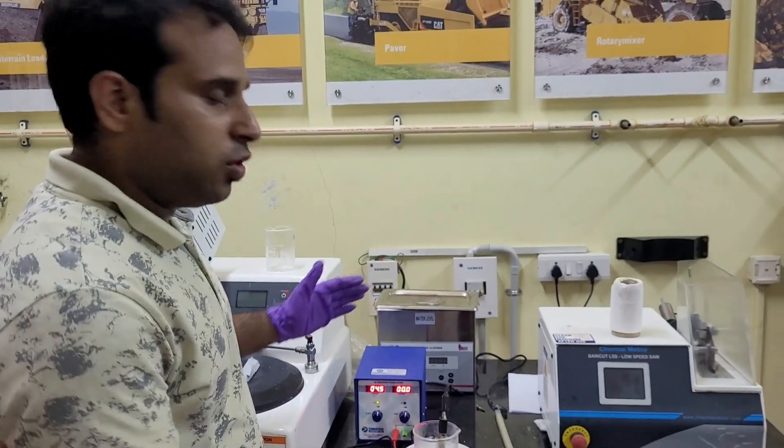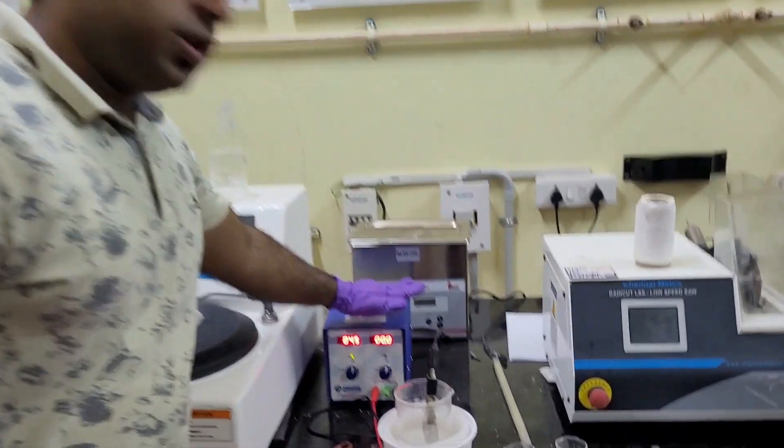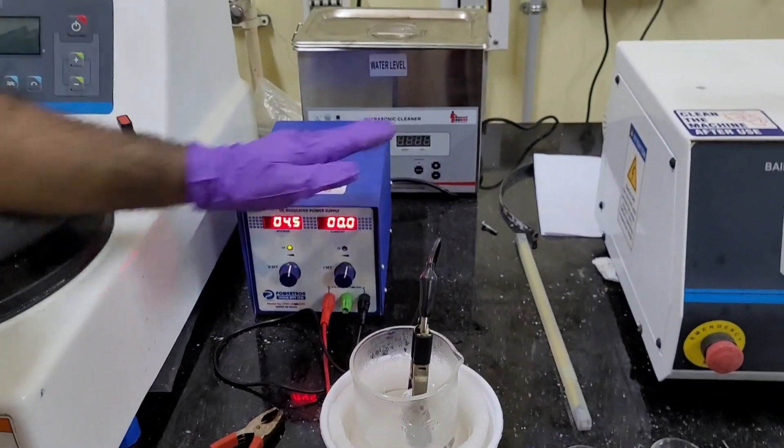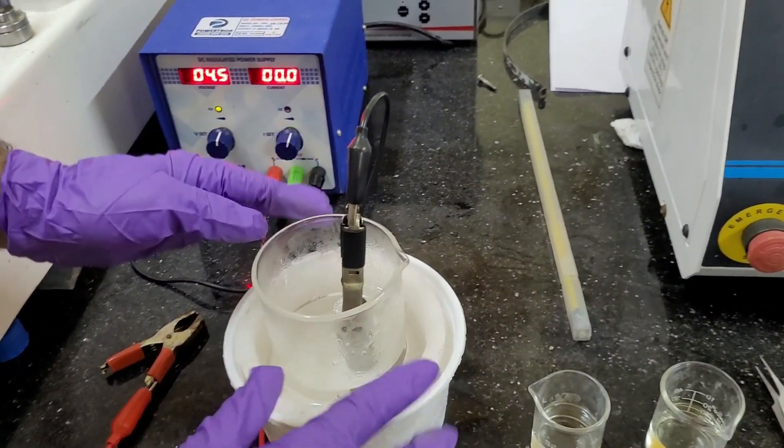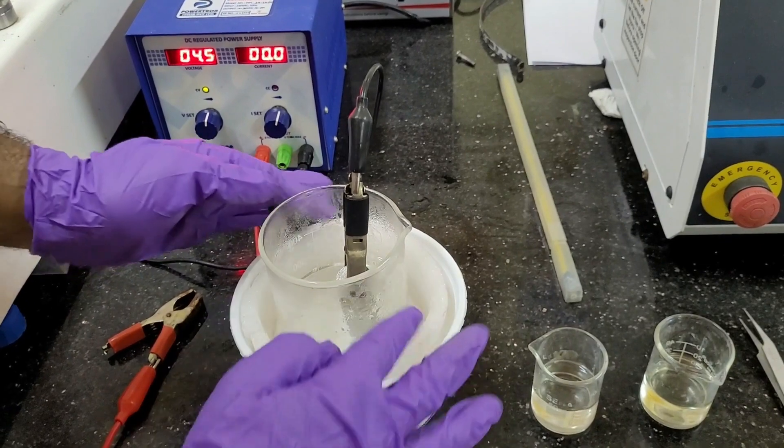First of all, I would like to give a little introduction about this setup. So, this is the voltage and current control unit. And this is the specific kind of setup where we can put a beaker. And outside this beaker, there is some space.